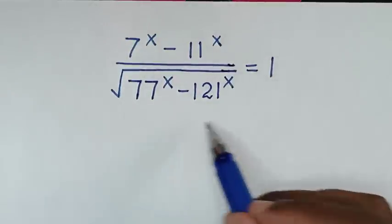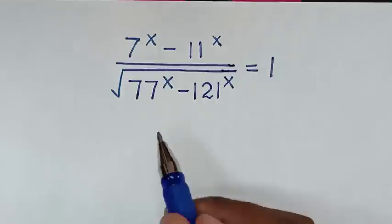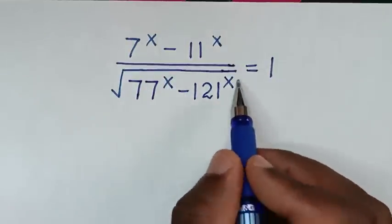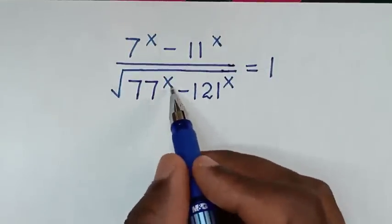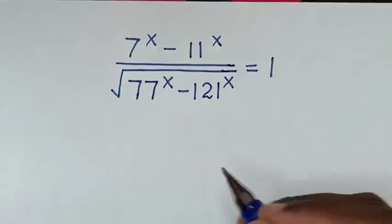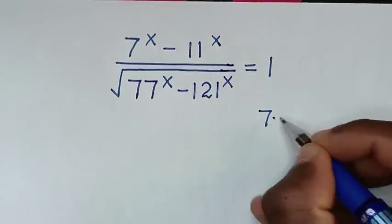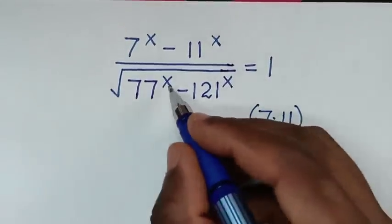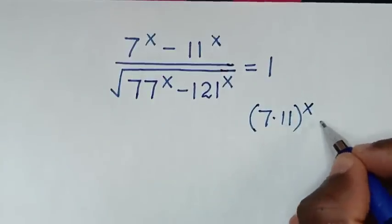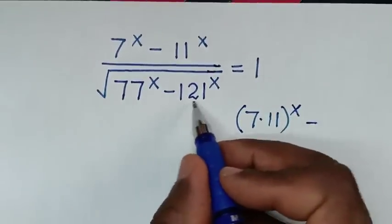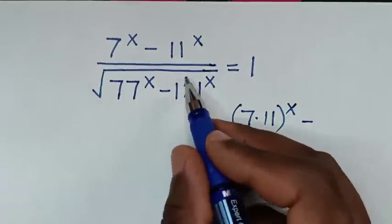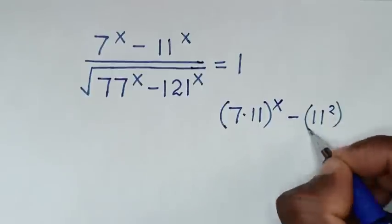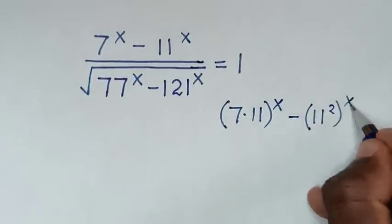First, inside the expression under the square root: 77^x — 77 is the same as 7 times 11, so it becomes (7 × 11) bracket to the power of x. Then minus 121^x — 121 is the same as 11 squared, so it becomes (11²) bracket to the power of x.